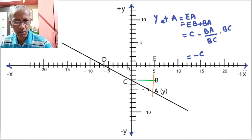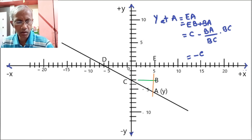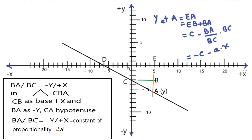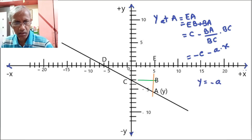And BA can be written as (BA/BC) times BC. C should be written as a negative value, so let's write it as minus c. BA by BC is nothing but the ratio of the perpendicular to the base — BA is the perpendicular and BC is the base — and that is nothing but the slope coefficient 'a' of the variable x. BC is the x value, so we can write minus a times x, giving us y equal to minus a·x minus c.